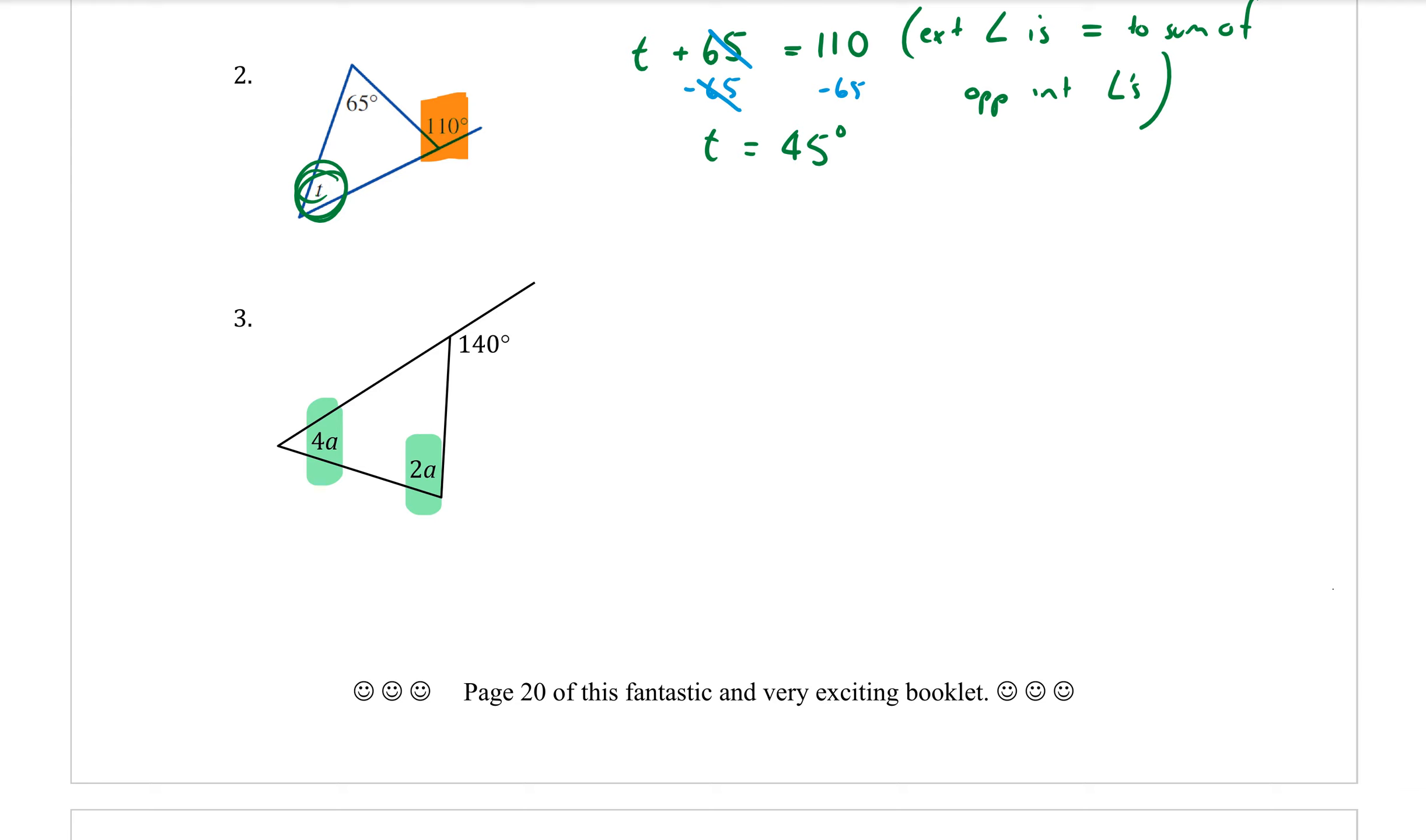4A plus 2A, all together that makes 6A, which is equal to the exterior angle of 140 degrees. Writing that long reason down: Exterior angle is equal to the sum of the opposite interior angles.